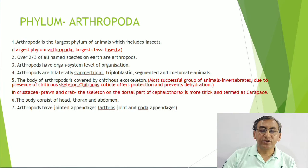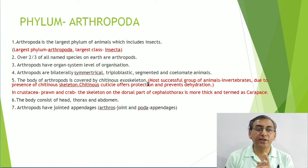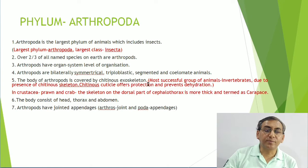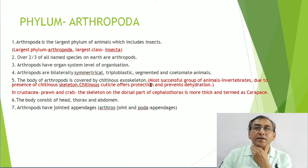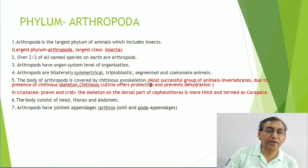Two characters common to all arthropods without exception: chitinous exoskeleton and segmentation. In Crustacea - prawn and crab - the skeleton on the dorsal side of the cephalothorax is thicker and is termed the carapace.